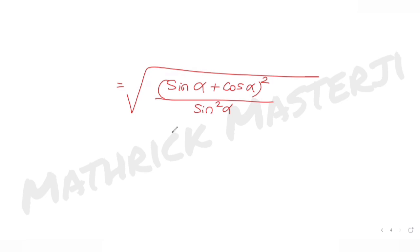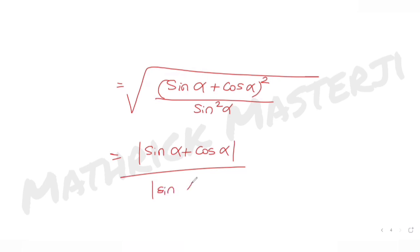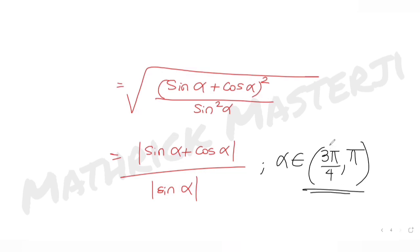Taking the square root, it can be positive or negative, so we write it in absolute value form: |sin α + cos α| / |sin α|. The interval for α is [3π/4, π]. Converting to degrees: 3π/4 = 135° and π = 180°.